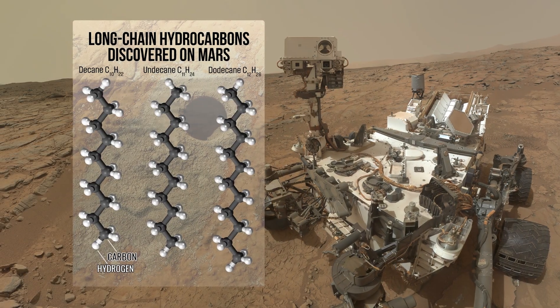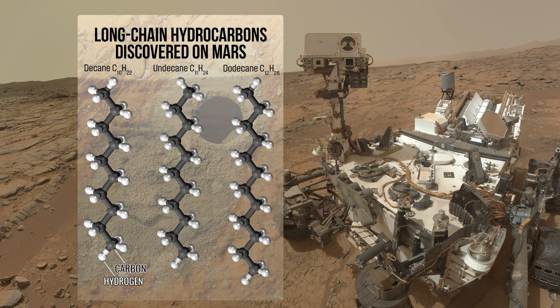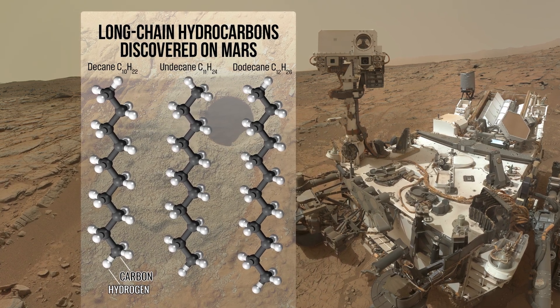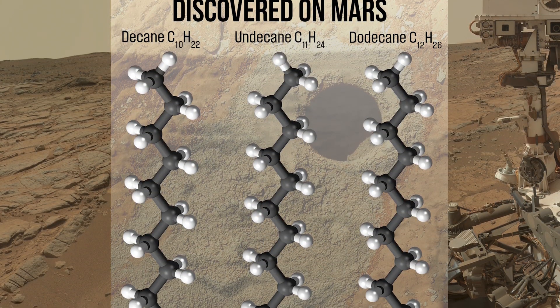Now, for the first time, scientists have identified long-chain hydrocarbons within the Cumberland samples, the largest organic molecules yet discovered on Mars.